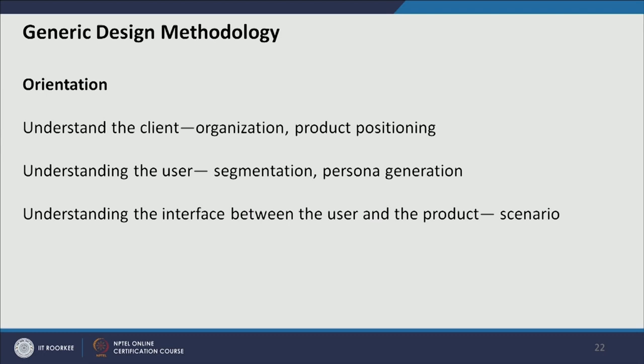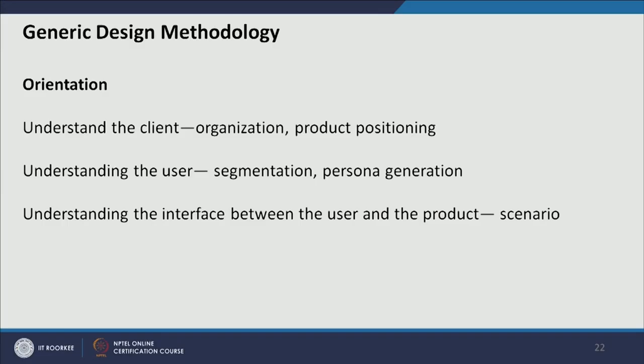In the orientation process there are three things: understanding the client, organization, or product; and if we are working on brand identity creation, we need to understand what kind of brand it is and what our client's need is. We also have to understand the user — what user set we are working with — and identify who our real target audience is through different tools and techniques like generating personas, creating scenarios, doing ethnographic surveys, and segmentation.